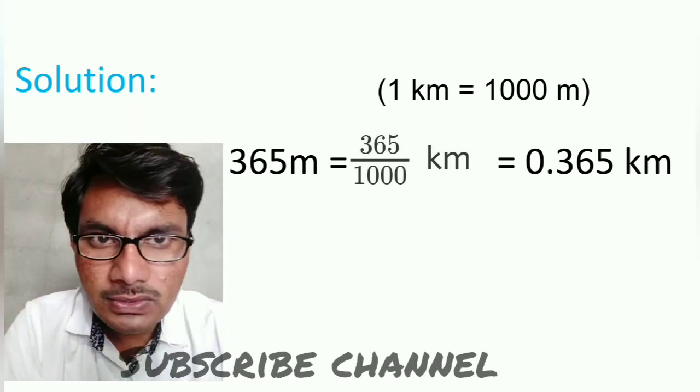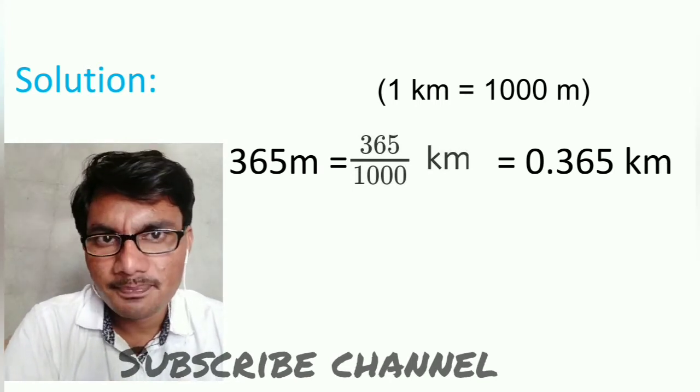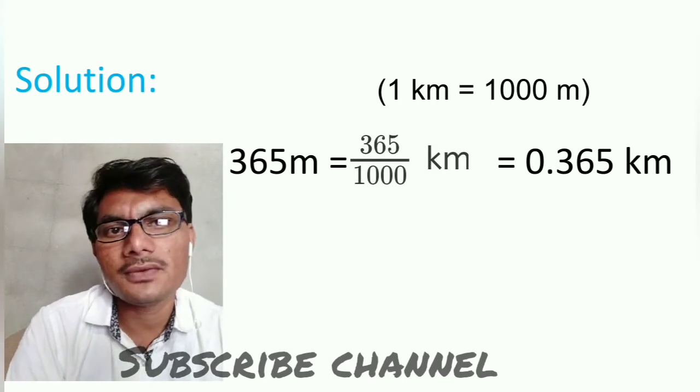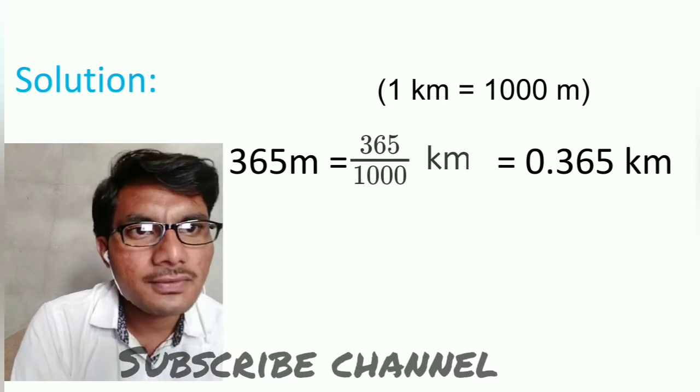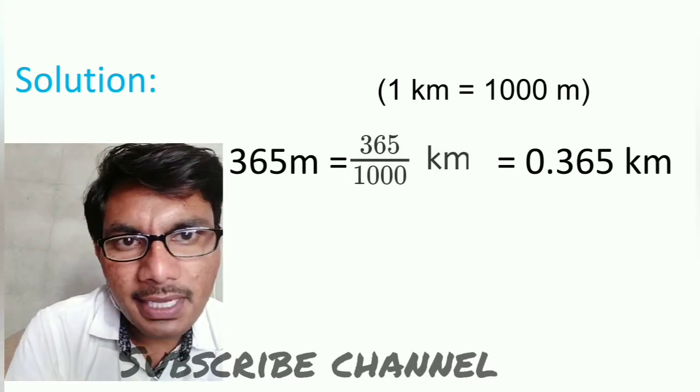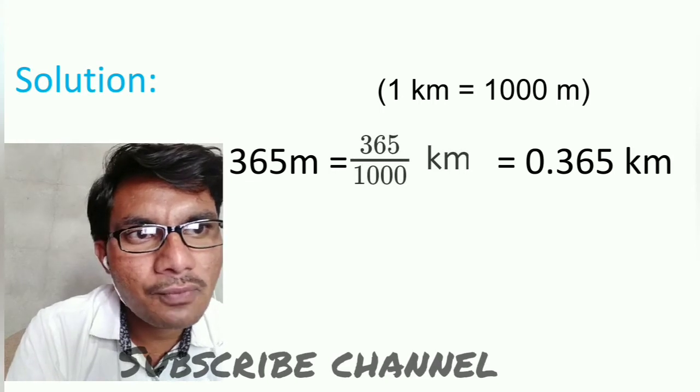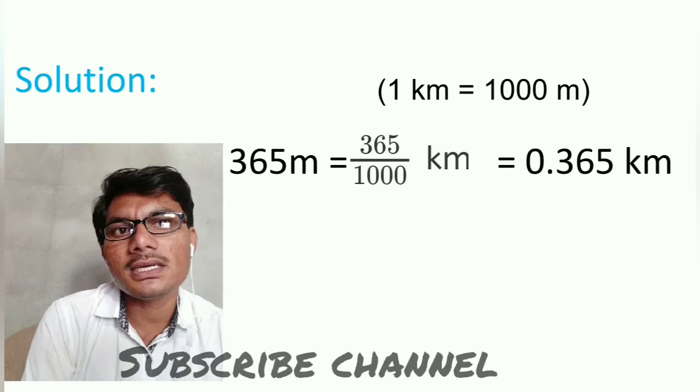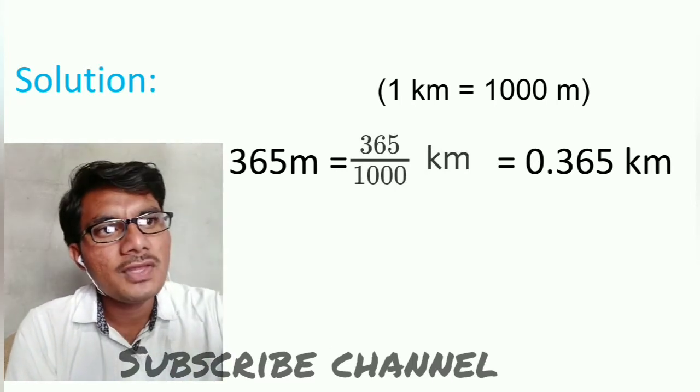Let's see. 365 meters is given. To convert to kilometers, divide by 1000. So 365 divided by 1000 equals 0.365 kilometers. In this way we can convert meters to kilometers by dividing by 1000.